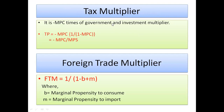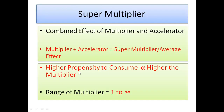The tax multiplier is similar but uses negative MPC: −MPC/(1-MPC), which equals −MPC/MPS. For the foreign trade multiplier (FTM), the formula is different: 1/(1-b+m), where b is marginal propensity to consume (MPC) and m is marginal propensity to import. If b and m values are given, substitute them into the formula to find the FTM.